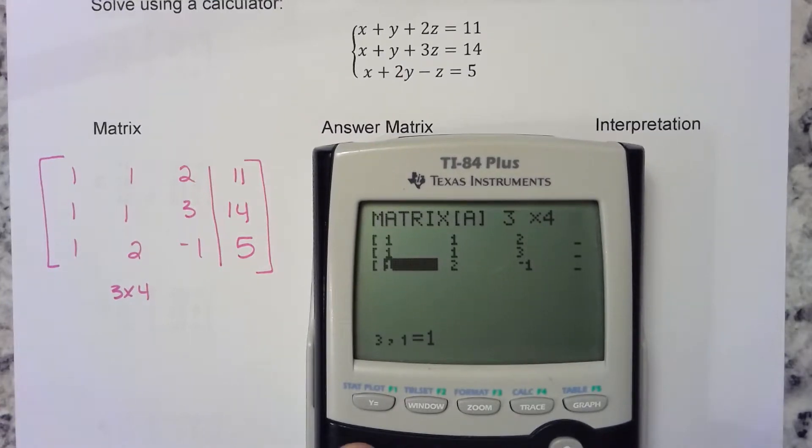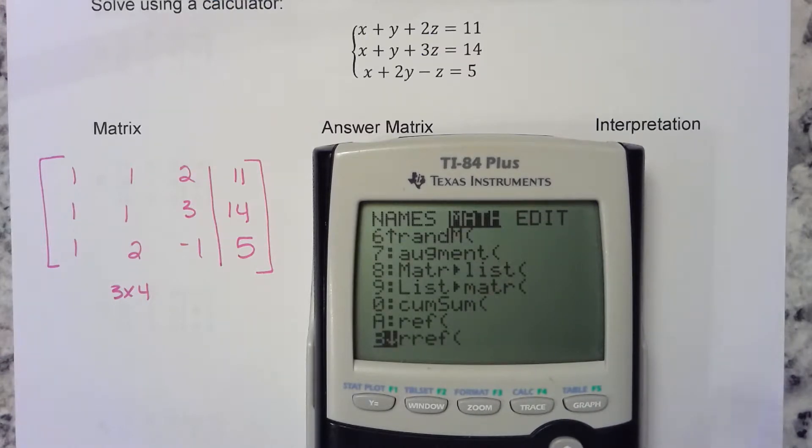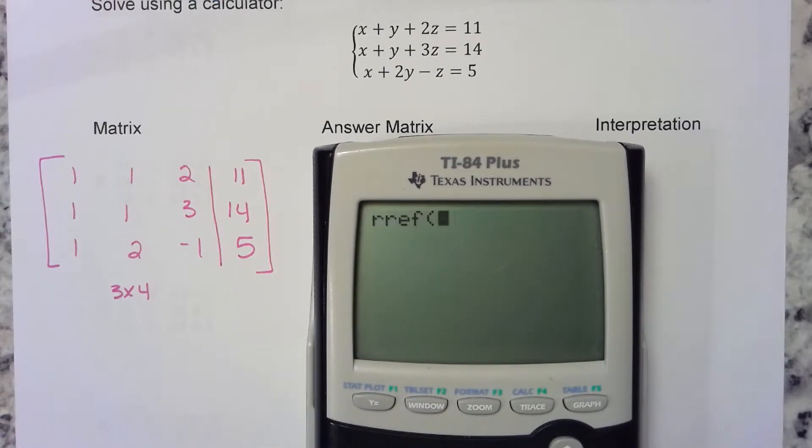Quit the screen. Make sure it's still a clear screen. Go second matrix. Now we want to make our calculator do all those row operations, so that's the math function. We want it in reduced row echelon form, that's RREF. Choose reduced row echelon form.